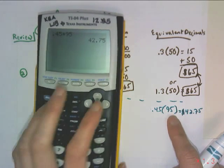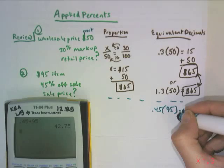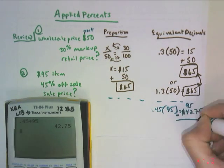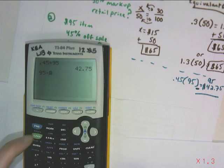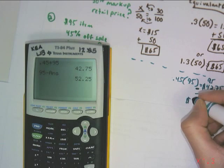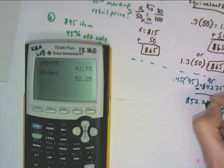So the final step I would have to do if this is what I'm saving means that I'm subtracting that from its original price. So 95 minus that gives you a sale price of $52.25.